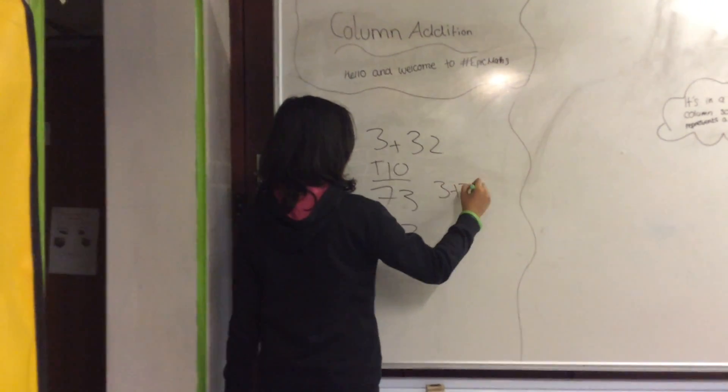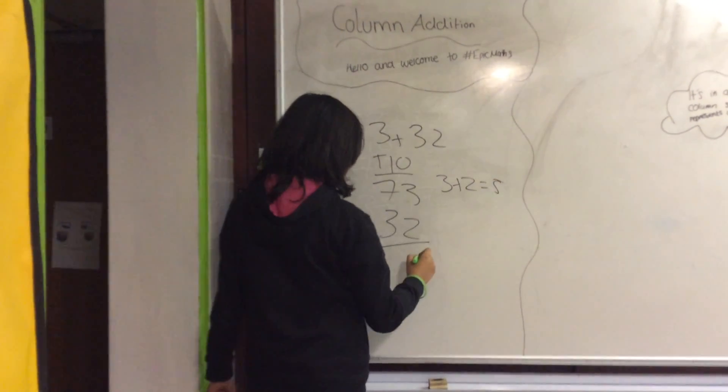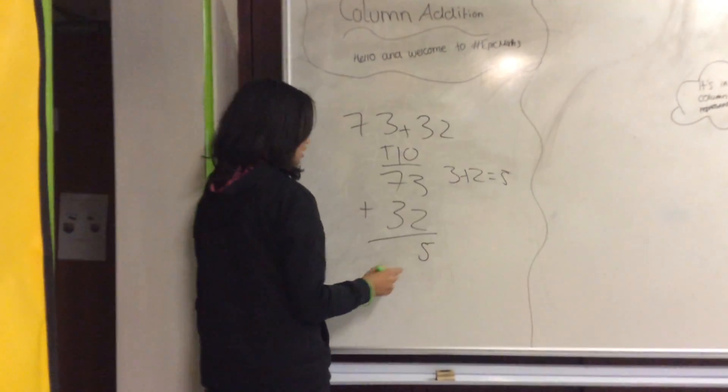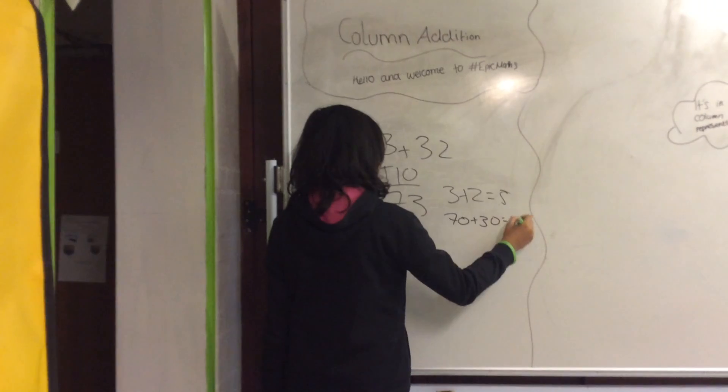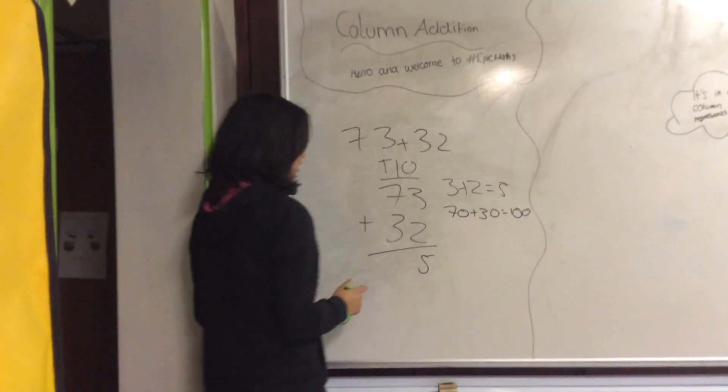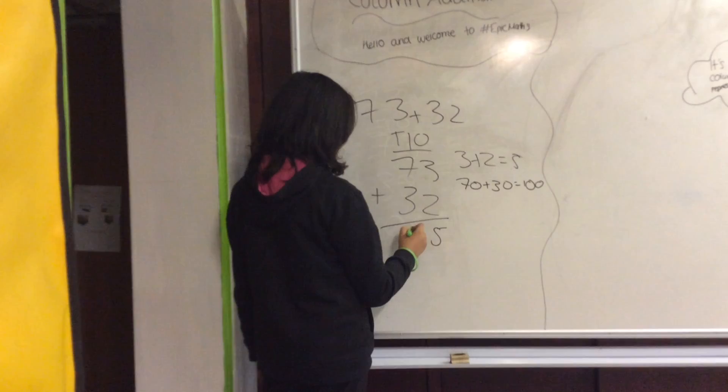So you do 3 plus 2 equals 5. You put the 5 underneath the ones column. And then 70 plus 30 which is 100. You do 100 divided by 10 because it is in the tens column. So the answer would be 10.